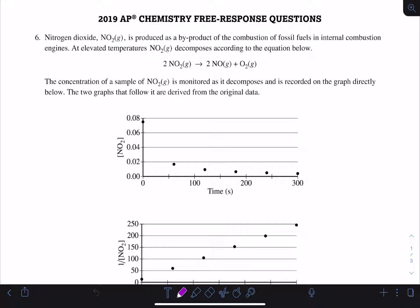You are told that the concentration of a sample of NO2 is monitored as it decomposes and is recorded on the graph directly below. The two graphs that follow it are derived from the original data.